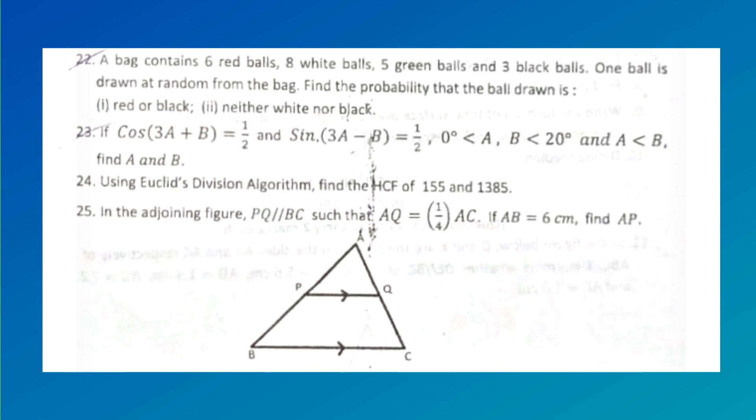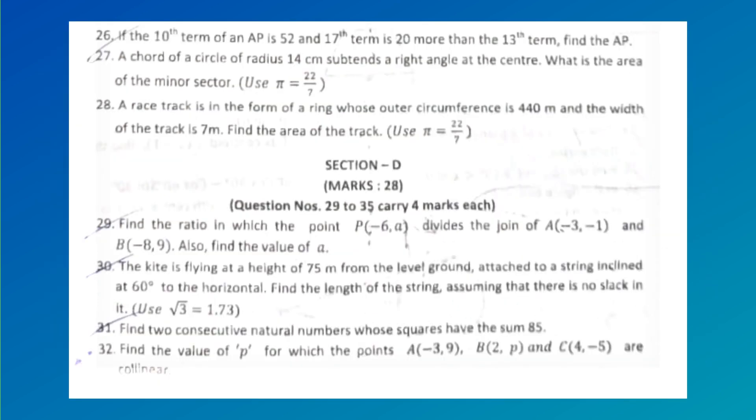In the joining figure, PQ is perpendicular to BC and TQ is parallel to BC so that AQ = 1/4 AC. If AB = 6 cm, find AP. If the 10th term of an AP is 52 and the 17th term is 20 more than the 13th term, find the AP.